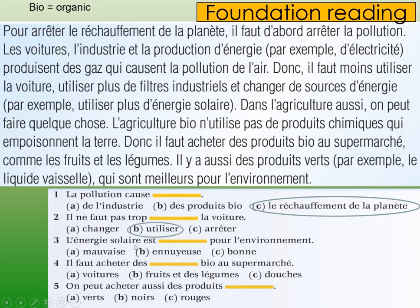Number four: 'il faut' something 'bio au supermarché'. So in the supermarket there is something organic. I'm not likely to buy an organic car — the most logical option is fruit and vegetables. 'Douche' means shower, so that's easily eliminated. Jumping back up to check, it says buying organic products at the supermarket and mentions fruit and vegetables, so I'm confident I got the right one. Number five: 'on peut acheter aussi des produits' — can I buy 'vert', 'noir', or 'rouge'? Scanning the text, it says 'produits verts' — green products. Logically we would call things green if they are environmentally friendly.